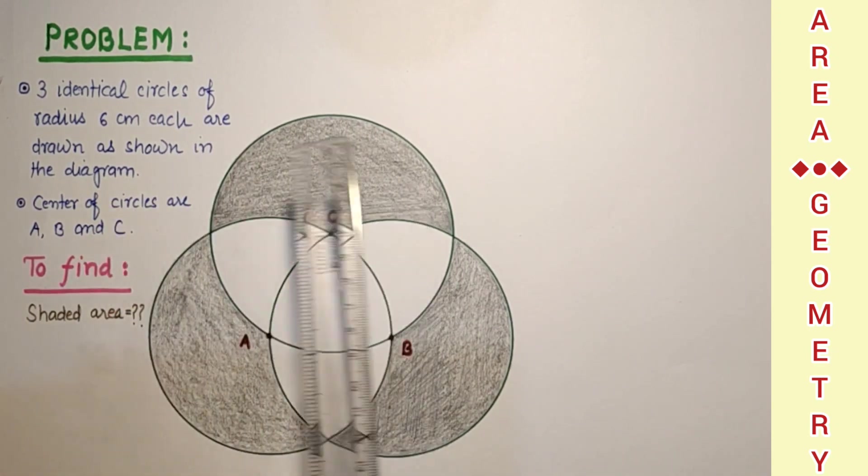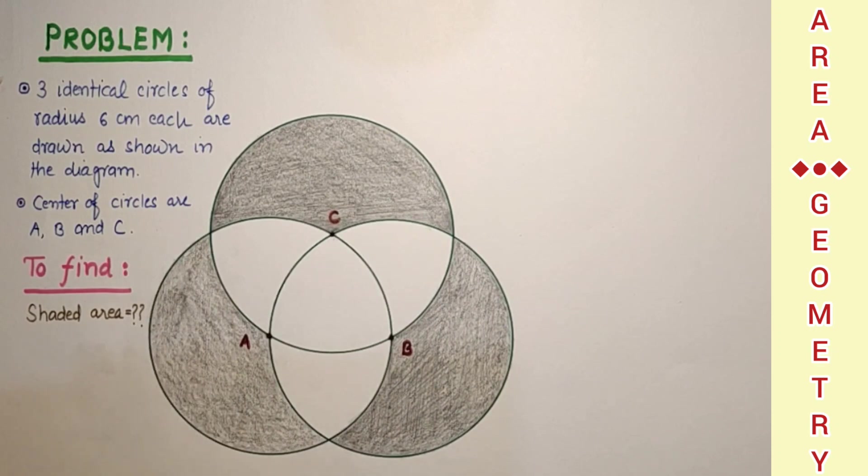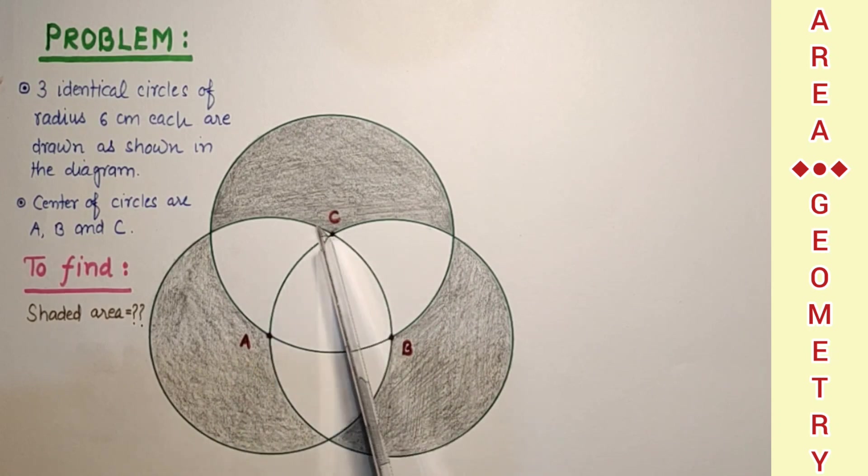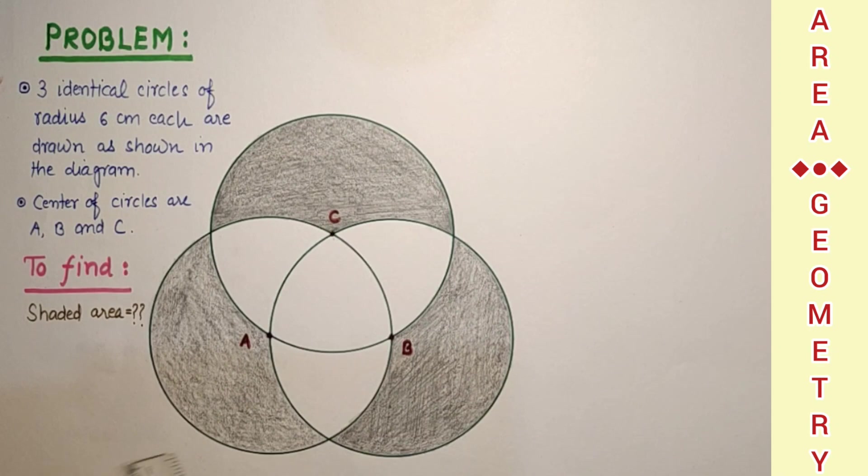There are three circles. Identical circles with centers A, B and C are drawn as given in the diagram. Each circle is passing through the center of other two circles. This circle is passing through C and A. This circle is passing through B and C. And similarly, this is passing through A and C. Radius of each circle is 6 cm. And we have to find the area of this shaded portion.